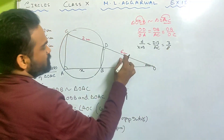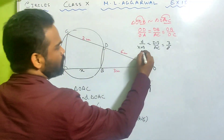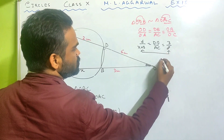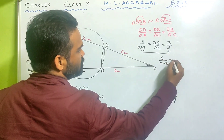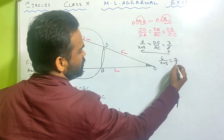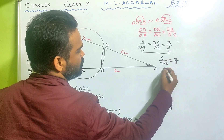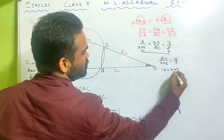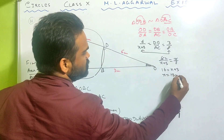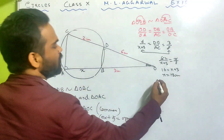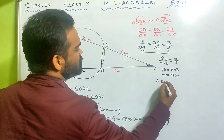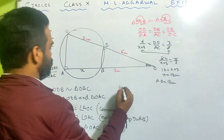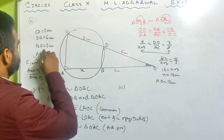So OD by OA equals OB by OC. We get 6 by (x + 3) equals 3 by 8, so 8 times 3 equals 24, and 3 times (x + 3) gives 3x + 9 equals 24, so x equals 13 centimeters. Which means AB is 13 centimeters. Done.